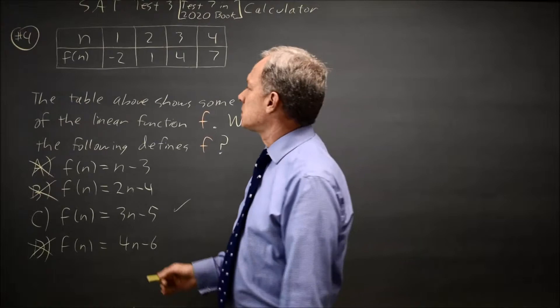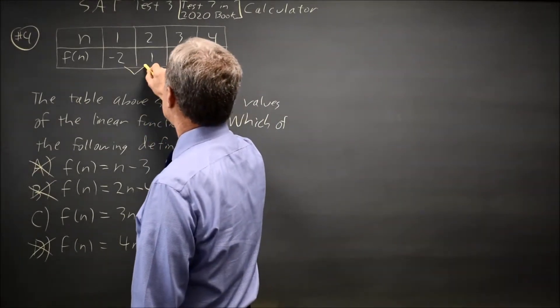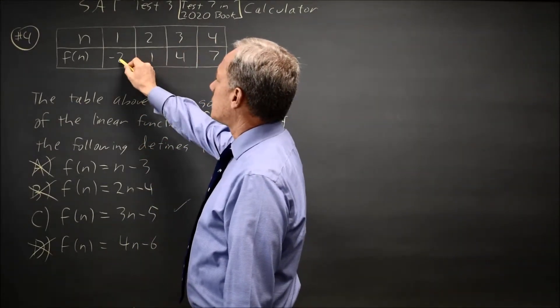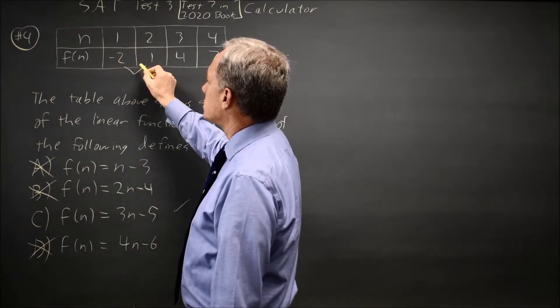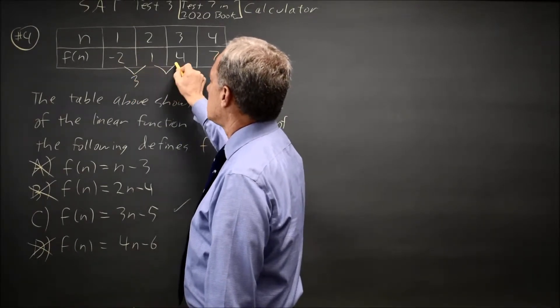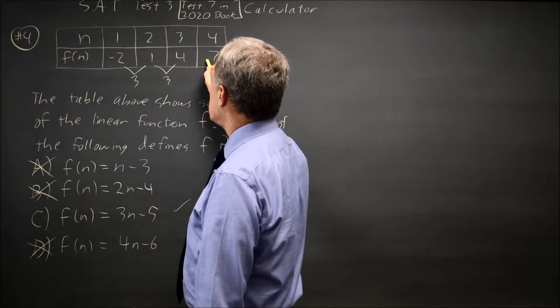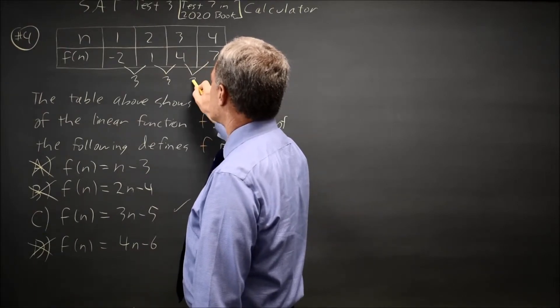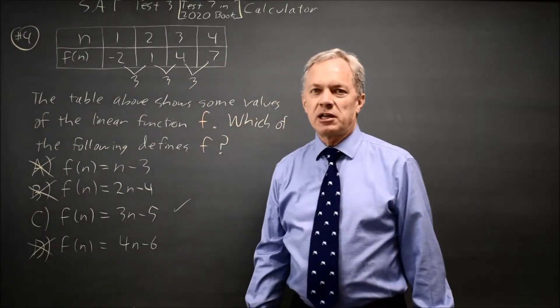Let's try another method. It's called finding the first differences. So 1 minus negative 2 is 1 plus 2 is 3. 4 minus 1 is 3.